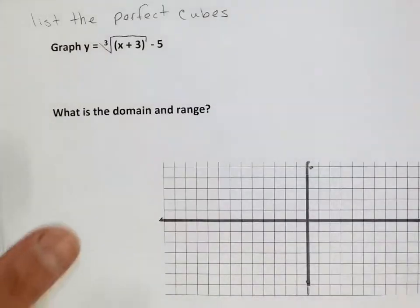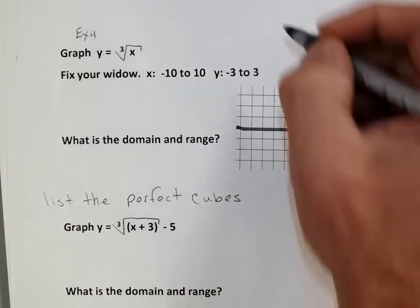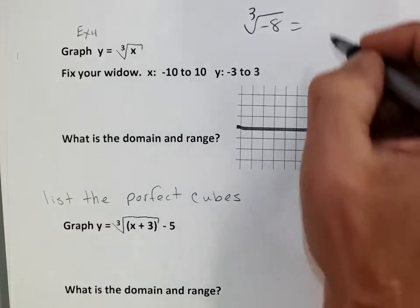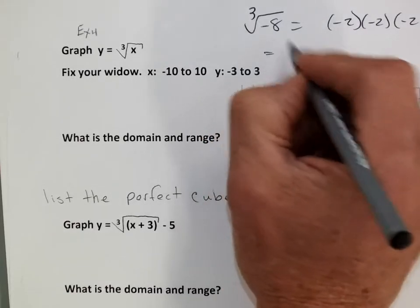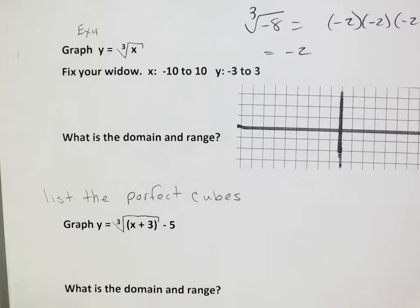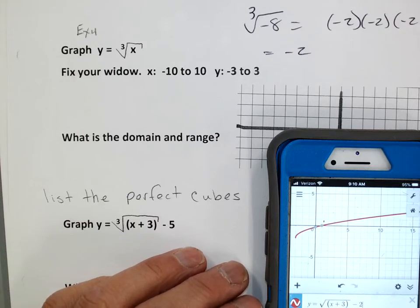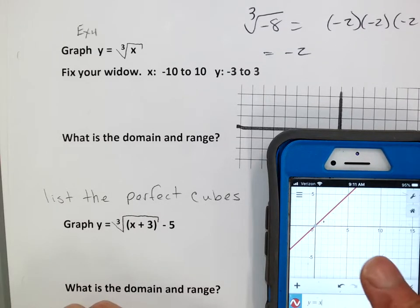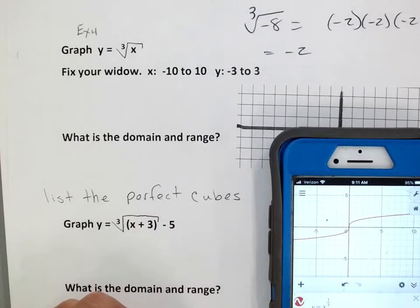Example four is a cube root. Before we do anything, think about this: you can take the cube root of negative numbers. The cube root of negative eight — that's negative two times negative two times negative two — so the cube root of negative eight is negative two. On Desmos, I can enter x to the power of one-third to get the cube root. There it is — that's my cube root graph, and it looks like a cubic graph.